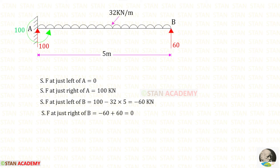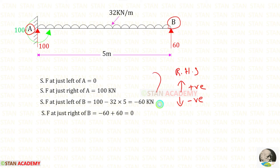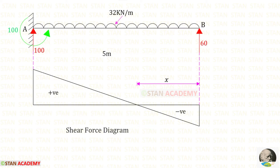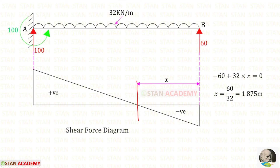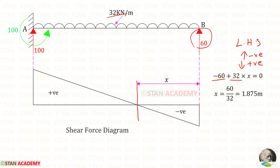Now we are going to draw the shear force diagram. We calculate shear force values from point A to point B using the right-hand side rule: upwards is positive and downwards is negative. At a certain point, the shear force becomes zero — at this point there will be maximum positive bending moment. Making a section at distance x from point B where shear force is zero, using the left-hand side rule (upwards negative, downwards positive): 60 acts upward so negative, UDL acts downward so positive. We get x = 1.875 m.